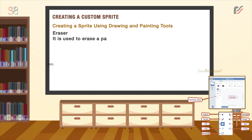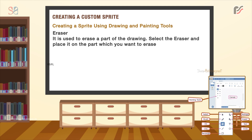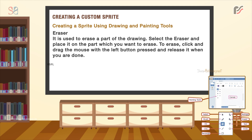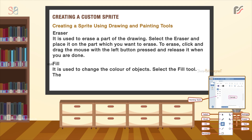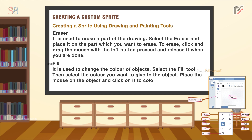The Erase tool is used to erase a part of the drawing. Select the eraser and place it on the part which you want to erase. To erase, click and drag the mouse with the left button pressed and release it when you are done. The Fill tool is used to change the color of objects. Select the fill tool, then select the color you want to give to the object. Place the mouse on the object and click on it to color. You cannot fill the background with this tool.